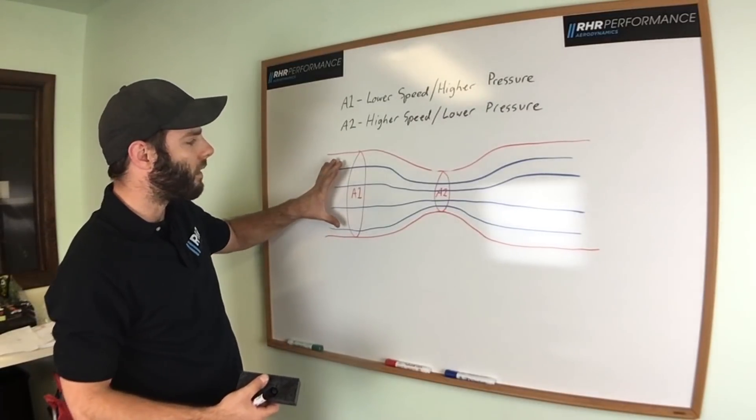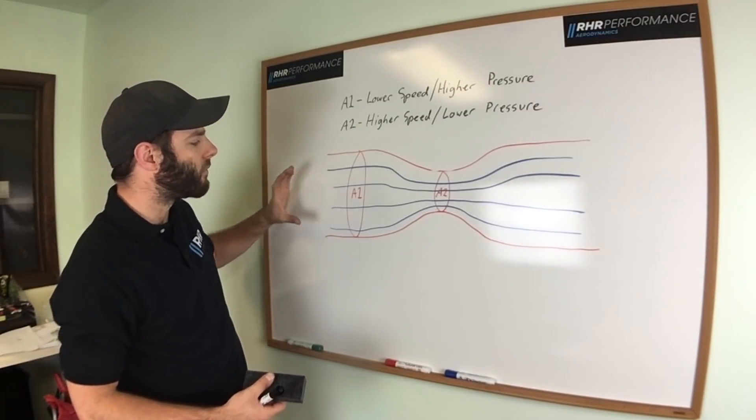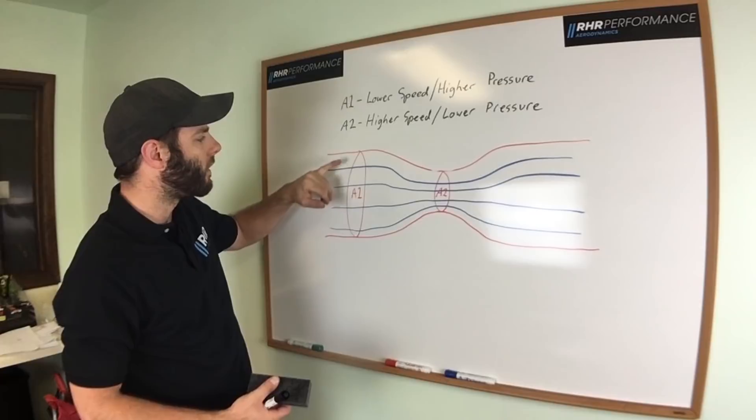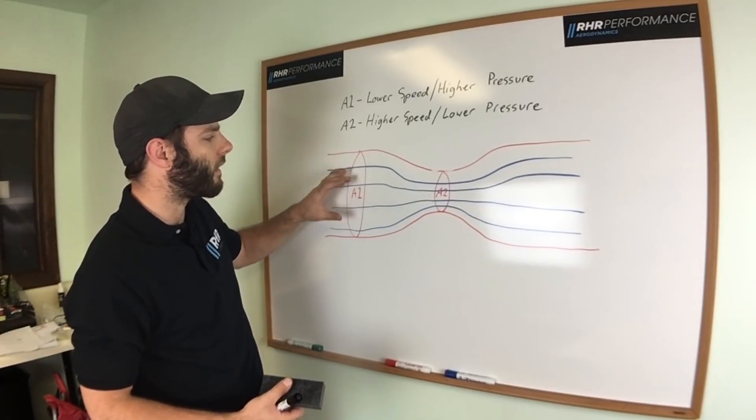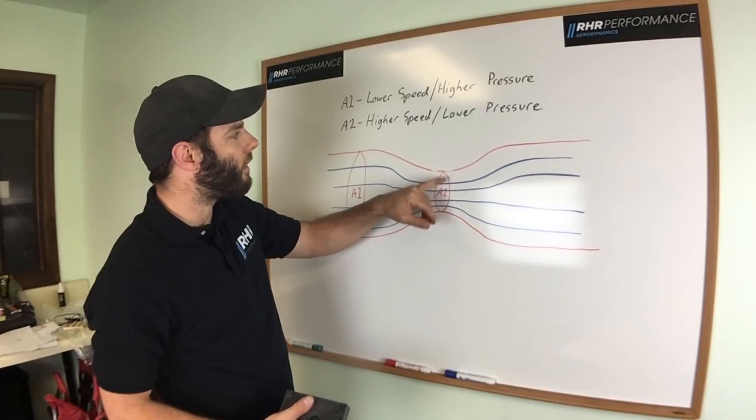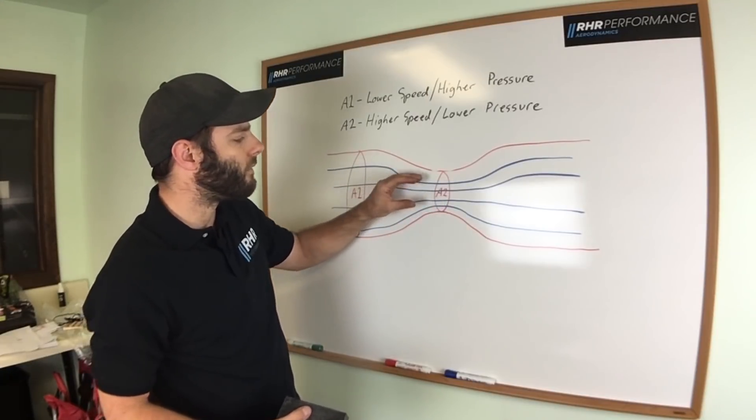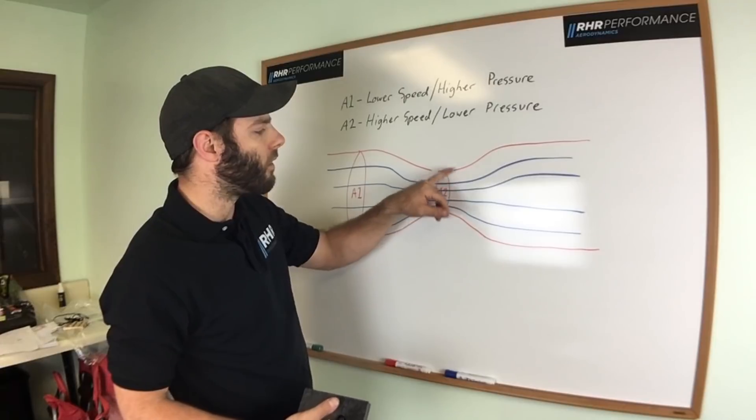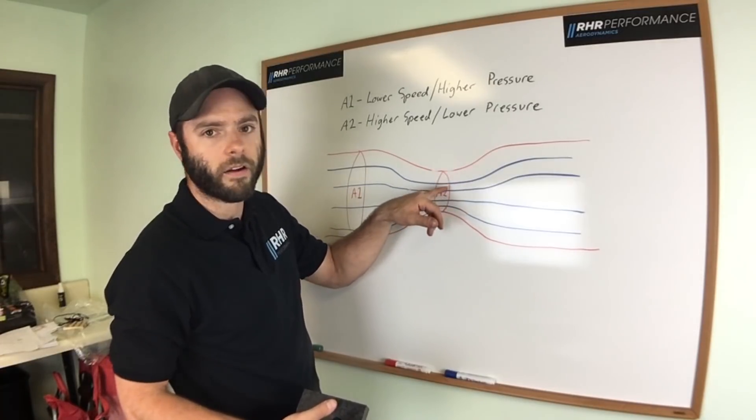So as you can see, area one right here, you got all this volume, so the air is moving a little bit slower, you get a higher pressure in this area. As it gets squeezed down in area two, the velocity will increase, giving you a low pressure zone in this area.